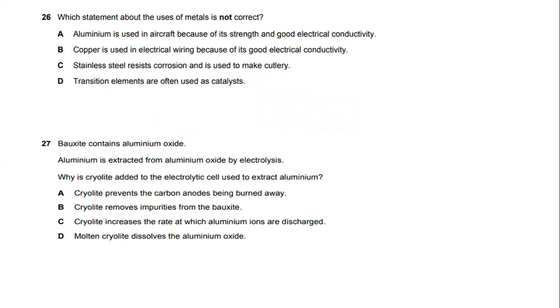Number 26. Which statement about the uses of metals is not correct? Aluminum alloys are used extensively in aircraft due to their high strength to weight ratio. In this question, it's trying to find out the use of metal which is not correct. The answer will be A. Aluminum is used in aircraft because of its strength and good electricity conductivity.